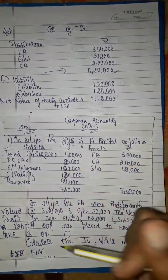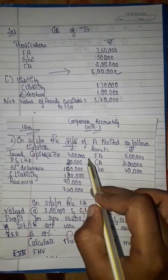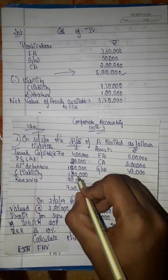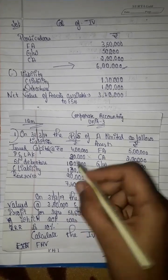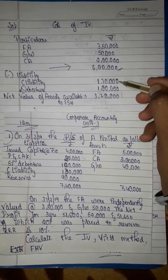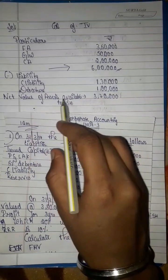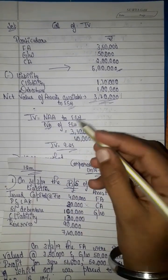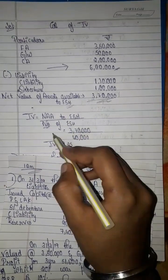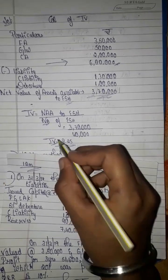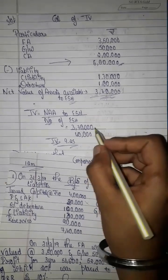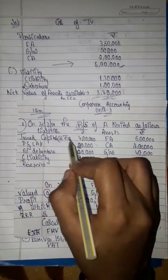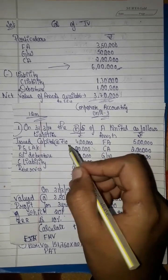We deduct the outside liabilities — 5% debentures 1 lakh, current liabilities 1 lakh 30,000 — to arrive at the net assets available to equity shareholders. The number of equity shares is calculated from the issued capital: 4 lakh rupees at face value of 10 rupees per share.